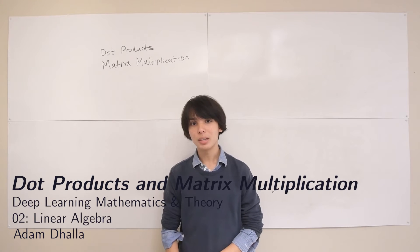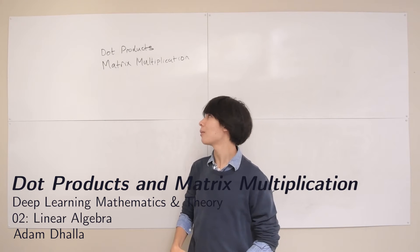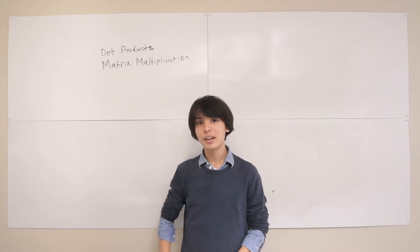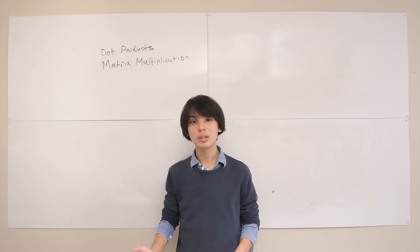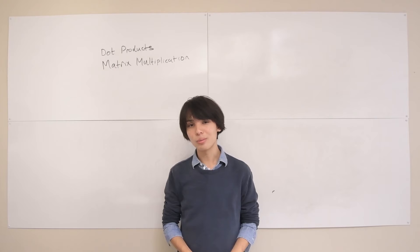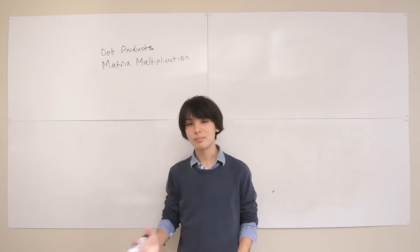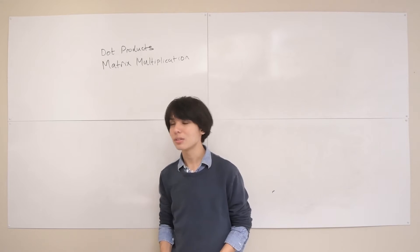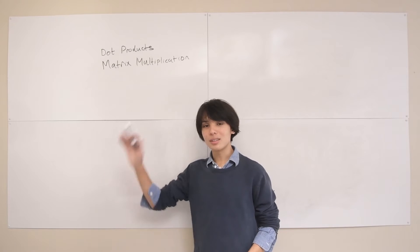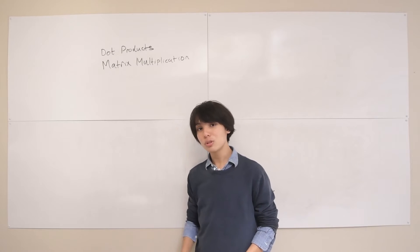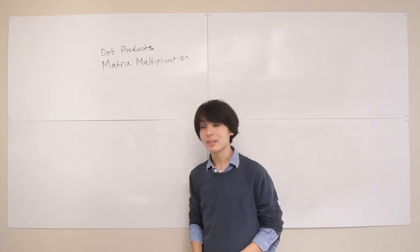Hi, in this lecture we're going to be covering two very foundational important topics in linear algebra: the dot product and matrix multiplication, which are two multiplication-related operations that we can do on matrices and vectors — matrices and matrices, and vectors and vectors. One more important thing: this lecture goes with chapter 2.2 of the deep learning textbook that this course accompanies.